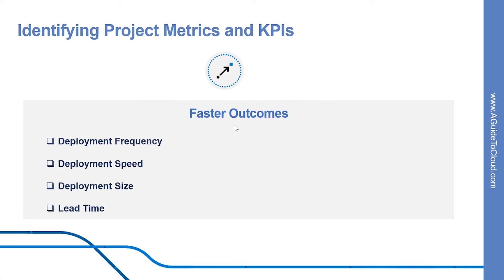Starting with faster outcomes: the first metric is deployment frequency — increasing the frequency of deployments is often a critical driver in DevOps projects. The second is deployment speed — it's important to decrease the time that deployments take. The third is deployment size — how many features, stories, and bug fixes are being deployed each time. And finally, lead time — how long does it take from starting on a work item until it is deployed?